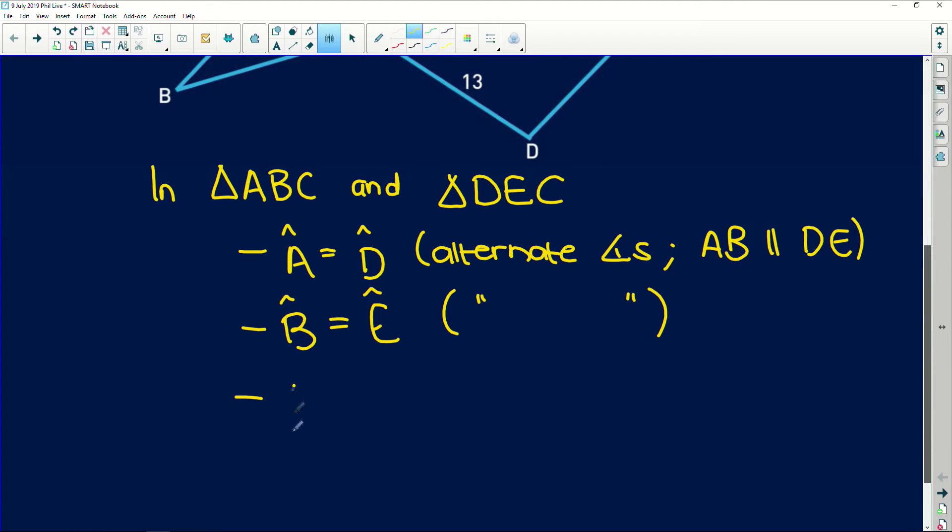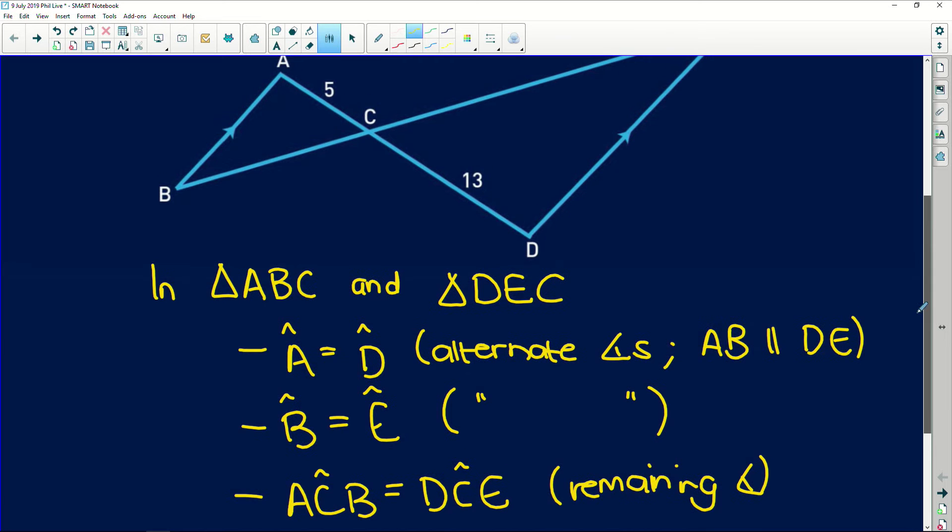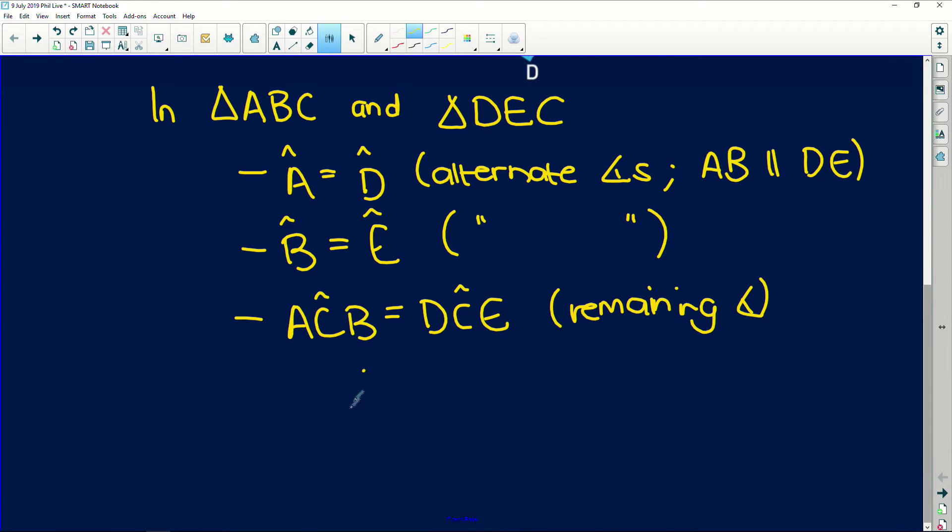And lastly, you can say that angle ACB is equal to angle DCE. Why? Because of remaining angles. Otherwise, you could also say that they are vertically opposite angles. You can see that these two angles are vertically opposite. So now we can conclude that triangle ABC is similar to triangle DEC.